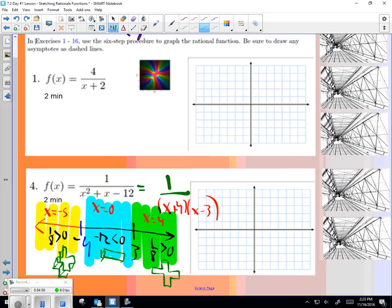Now let's do the rest. How about domain? All reals except what? Can't have three, can't have negative four. The vertical asymptotes are going to be three and negative four. And you set them equal to what? x.